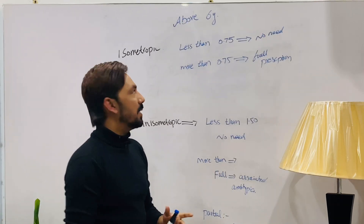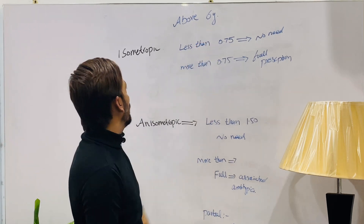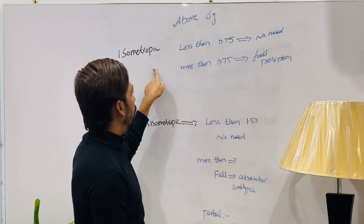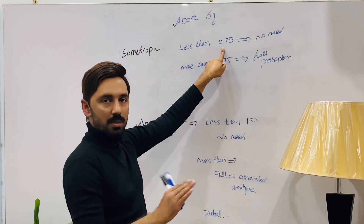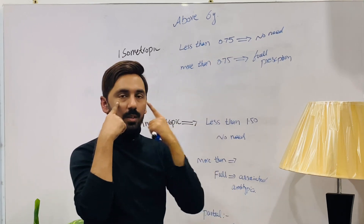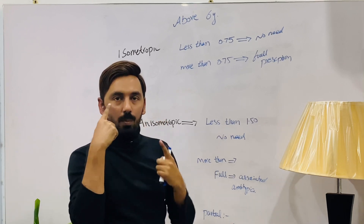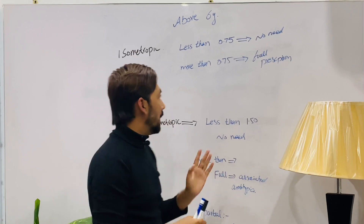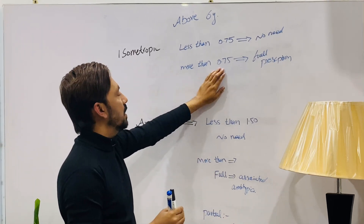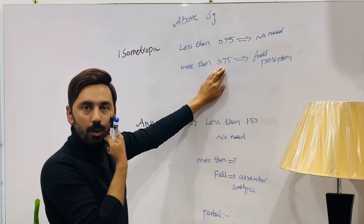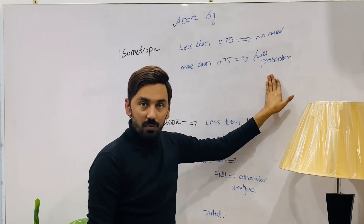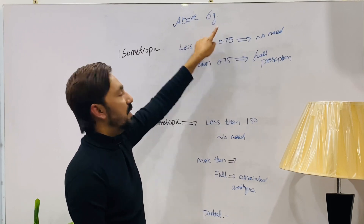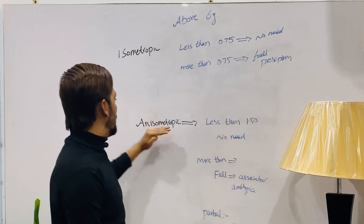For age six years and above with isometropic astigmatism: if isometropia is less than 0.75 diopters in both eyes (e.g., 0.25, 0.50, or 0.75 in each eye), no correction is needed. If isometropia is more than 0.75 diopters, prescribe full correction. This is an important rule for patients aged six or older.